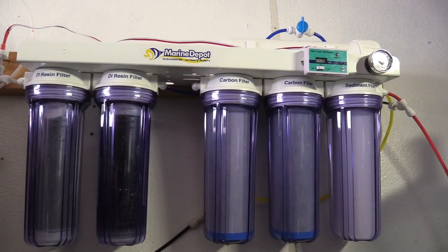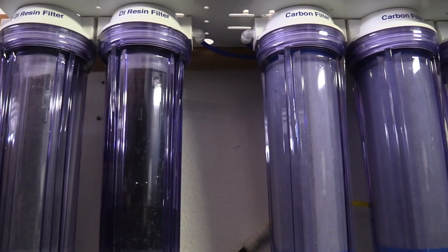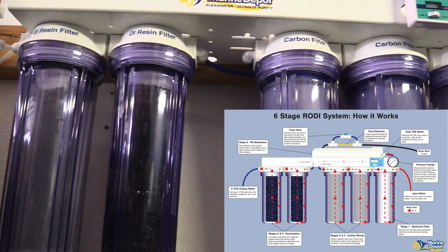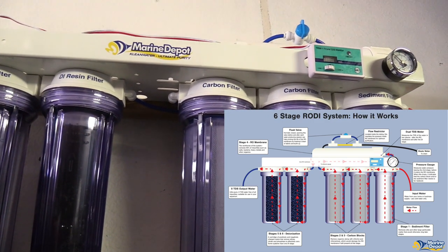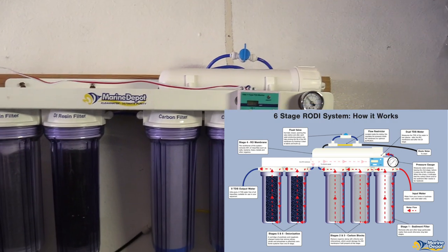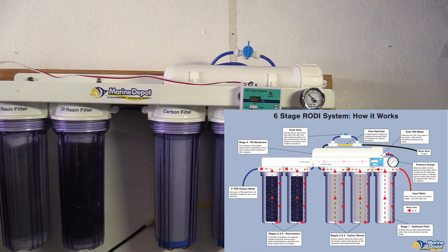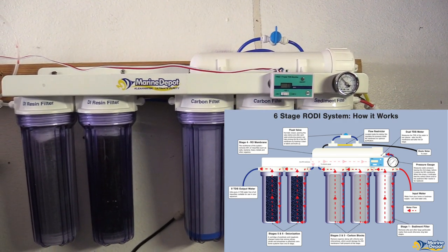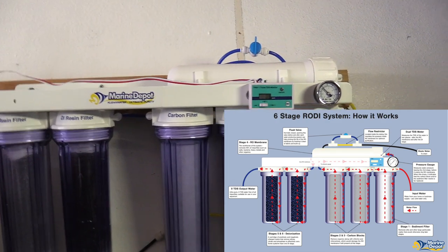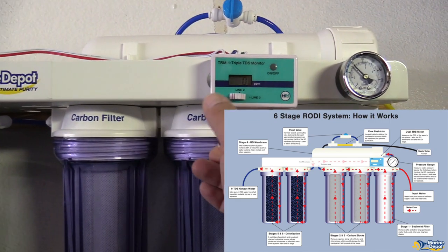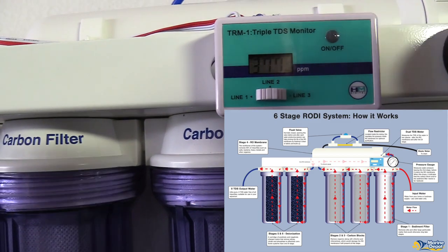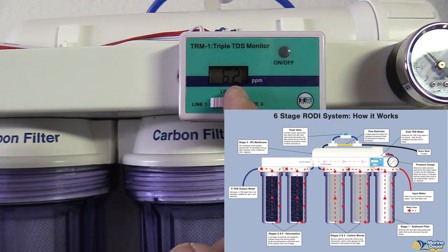Let's go ahead and talk real briefly how an RODI system works. Once again, this video is pretty much for anybody who has been looking at this system or is new to the hobby. The water line is going to come in, it's going to go through your sediment filter which is the first stage. Then the second stage and third stage, it's going to go through the carbon block. Then it's going to go into the membrane which is the top, and then from there it's going to hit the DI resin and then the last stage, another DI resin. Now the DI resins are cool because they're color changing. Once it's been exhausted, they'll start changing color from that nice dark blue to like a yellow. And at that time you want to go ahead and order some more DI resin and just change it out.